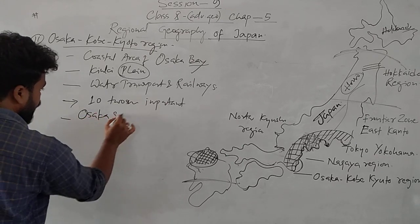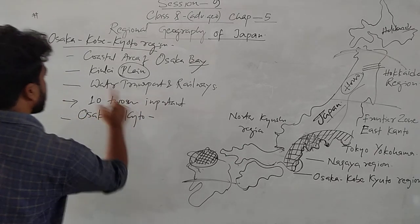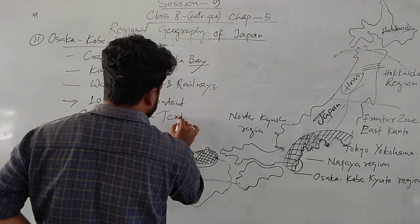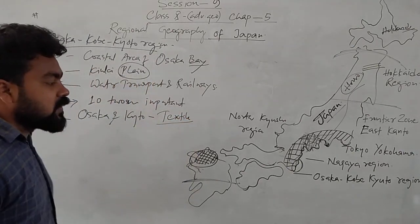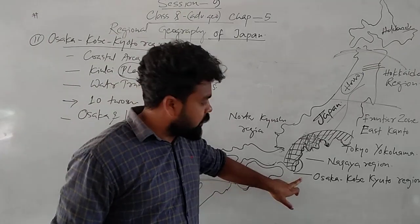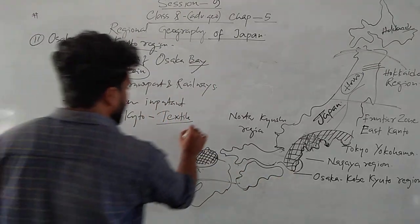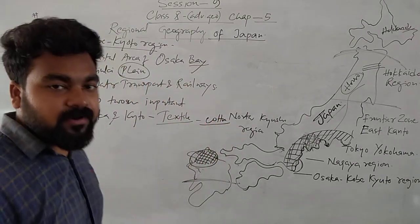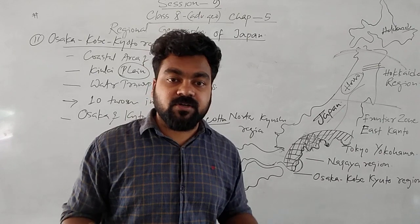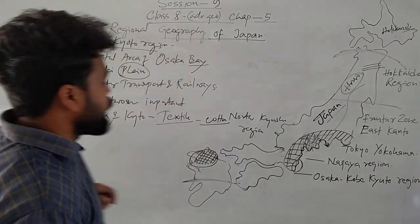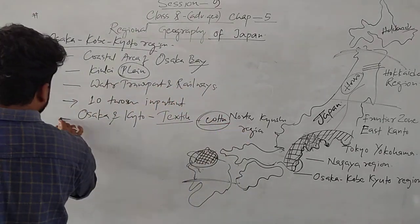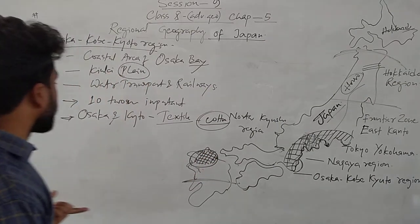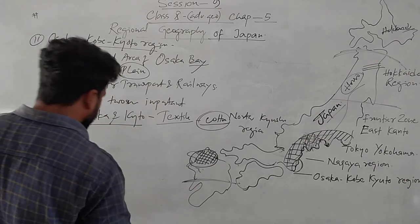The Osaka-Kyoto region is famous for textile industries. They can directly import raw materials — mainly cotton — from other countries such as Australia. Because cotton is readily available through ocean trade, this region is highly developed in textile manufacturing.